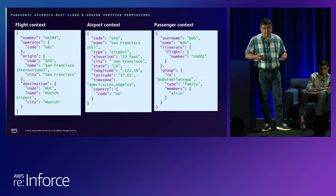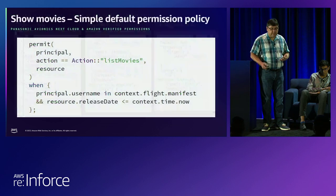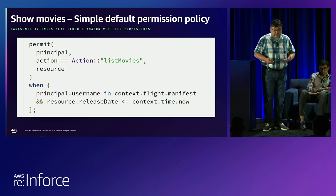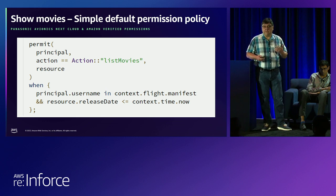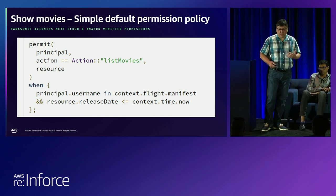An example of our context at that time includes flight context, airport context, passenger context, and group membership — maybe Bob travels with his spouse and they are part of the same group. A simple Verified Permissions policy could allow listing movies filtered by their release date. Movies have a release date, and you cannot show a movie before it. So we filter the list to show only movies with a release date in the past.